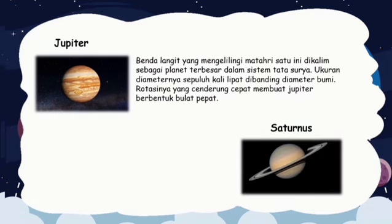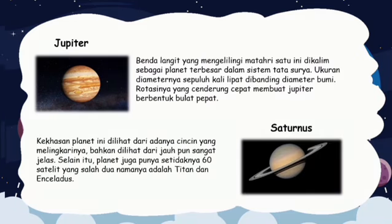6. Saturnus. Kekhasan planet ini dilihat dari adanya cincin yang melingkarinya, bahkan dilihat dari jauh pun sangat jelas. Selain itu, planet ini juga mempunyai setidaknya 60 satelit, yang salah duanya bernama Titan dan Enceladus.